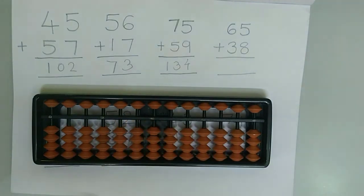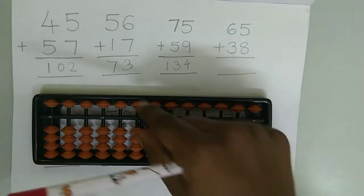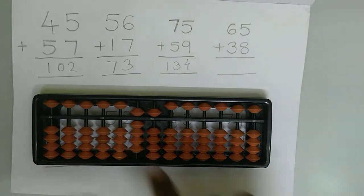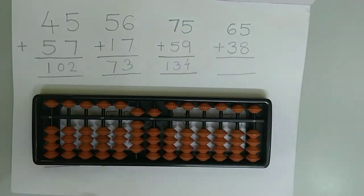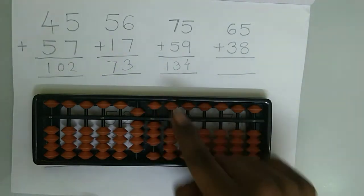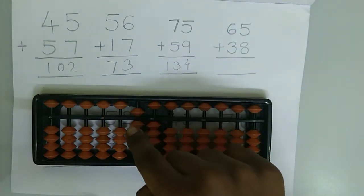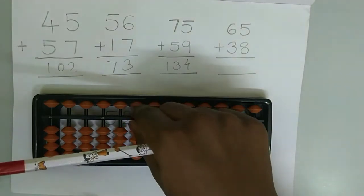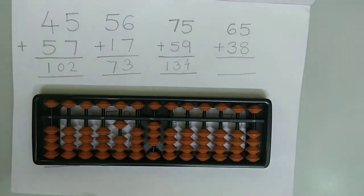Let's try the next example which is 65 plus 38. First we need to represent 65 on the abacus. Now we need to add 38. First we need to add 3 to the tens rod and 8 to the ones rod. The friend of 8 is 2, so we need to subtract 2 from 5. The small friend of 2 is 3, so we add 3 and subtract the small boss which is 5. And again as usual at the last we need to add the big friend boss to the tens rod. To add 10 to 90 we use the big friend concept — imagine 90 as 9 and 10 as 1. The friend of 1 is 9, so we subtract 9 and add the boss which is 10, imagining 100 as 10. The final answer is 103.